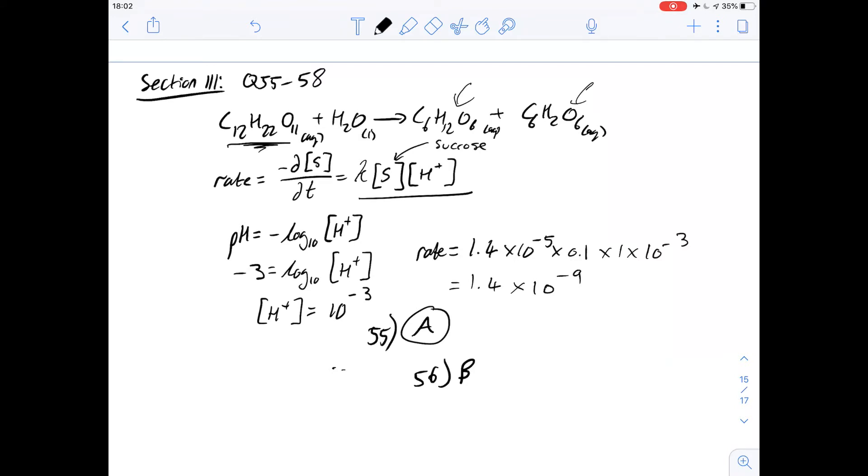For 57 then it says, together with stoichiometric equation and the rate equation, indicate that as the hydrolysis of sucrose progresses. And then it talks about the changes in the concentration of sucrose and in the concentration of the hydrogen ions. Well, we know as sucrose is broken down, the concentration of sucrose has to decrease. So that eliminates two of them.